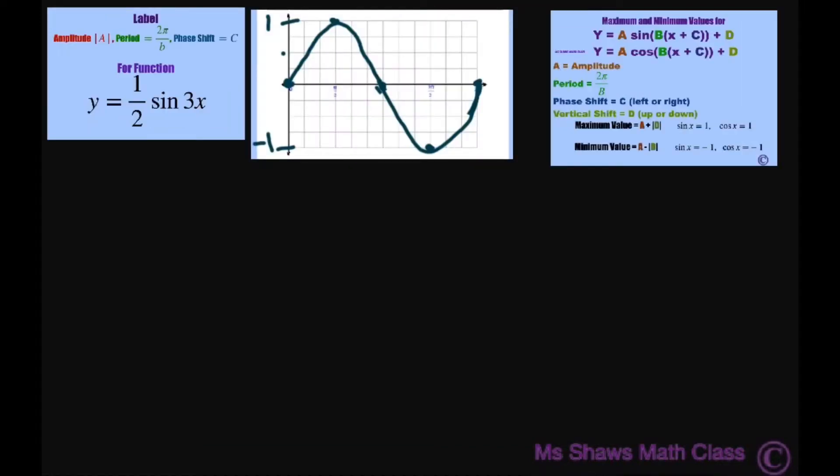Basically your amplitude comes from this number here. We have sine, so that's your amplitude. Our amplitude is going to be one-half. You're supposed to do the absolute value of that and that gives you one-half. And let's talk about what that means.